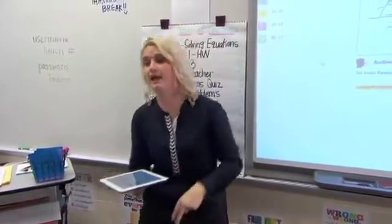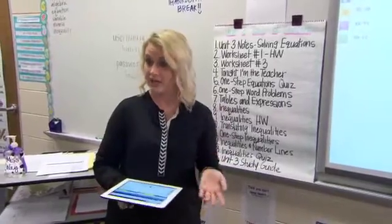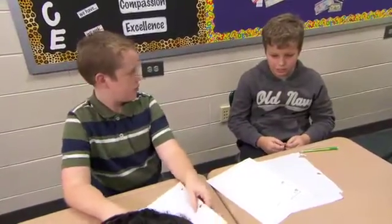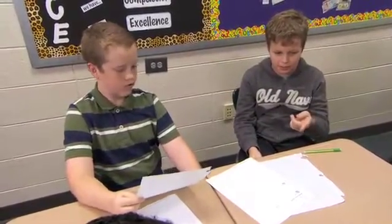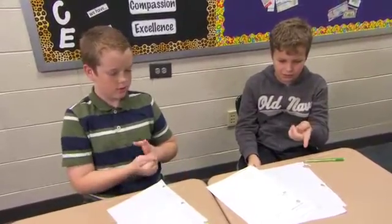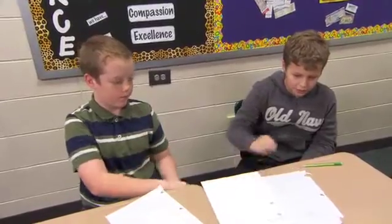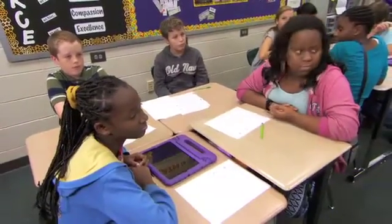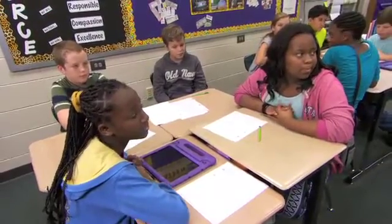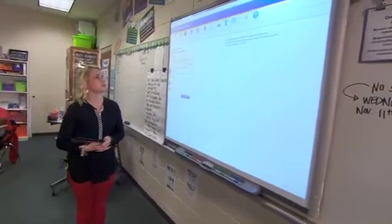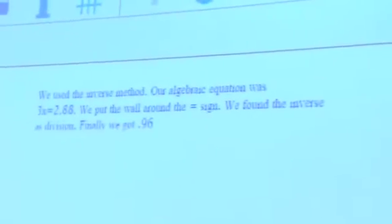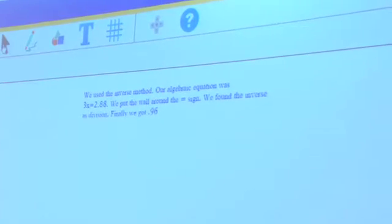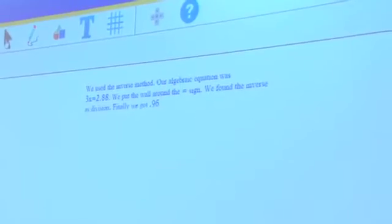Ethan and Joey, tell me what you did — you didn't write the equation first. We divided two dollars and eighty-eight cents by three and got ninety-six cents to make sure ninety-six was the right answer. Even though Jamiah and Shadalyn solved it a different way, did you all get the same answer? Yes. This group said they used the inverse method — the opposite of multiplication. Our algebraic equation was 3x equals two dollars and eighty-eight cents; using the inverse operation of division, we got ninety-six cents.